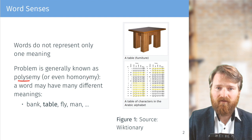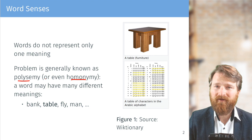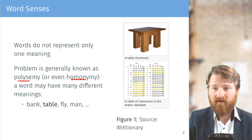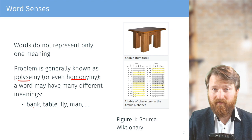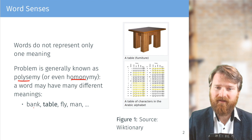This phenomenon is known generally as polysemy or homonymy — a word may have many different meanings. For example, 'table' could be a piece of furniture or a spreadsheet. 'Bank' could be a financial institution, a riverbank, or a place to sit. There is no surprise here.